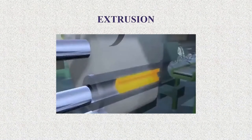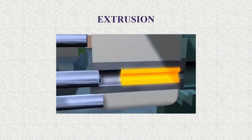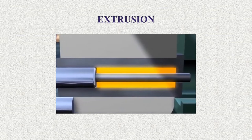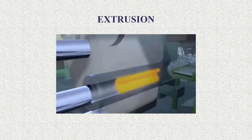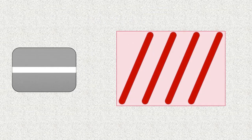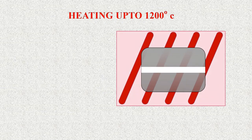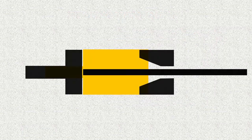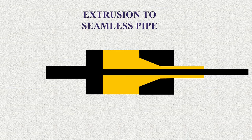Seamless pipes are manufactured through a production process called extrusion. First, the billet is deep bored. Then the billet is heated to 1200 degrees Celsius. When extrusion starts, the billet is pressed out through the die and mandrel, resulting in a seamless pipe.